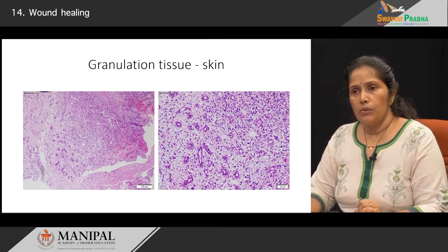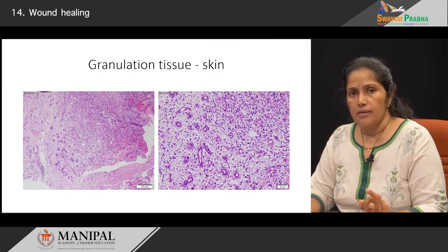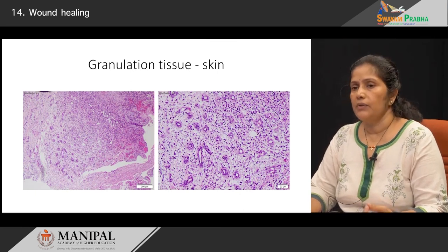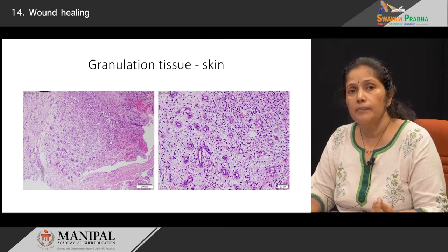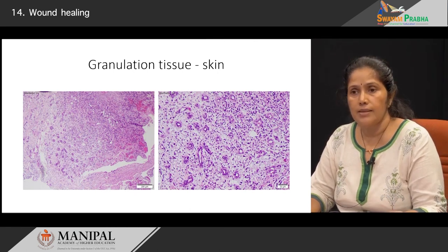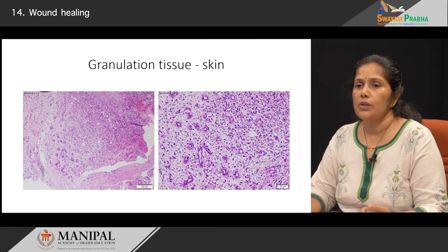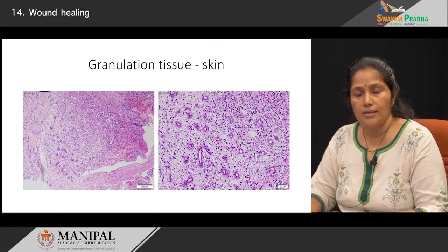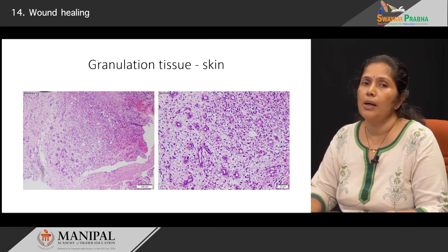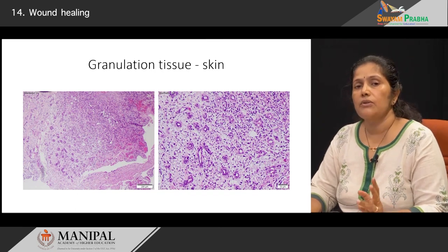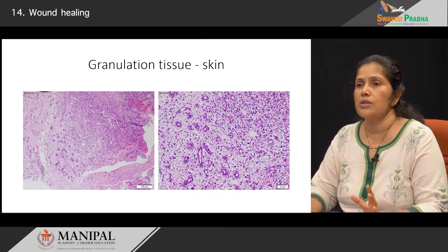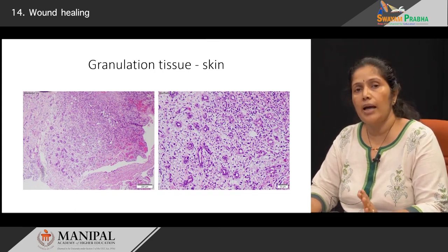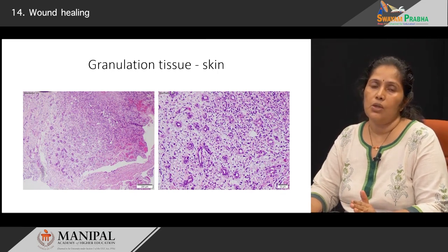We have been talking about three important things: blood vessels, inflammatory cells, and the matrix. These three components form what is known as the granulation tissue. What you have been seeing throughout all these pictures was the components of granulation tissue.